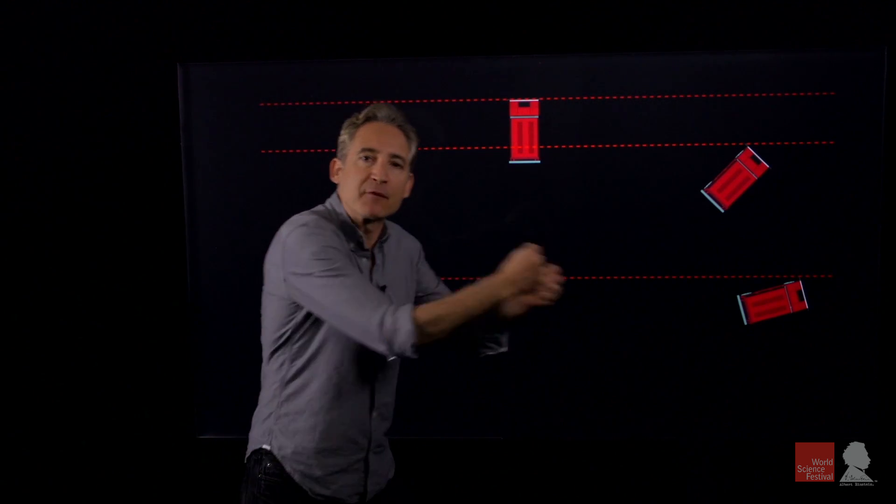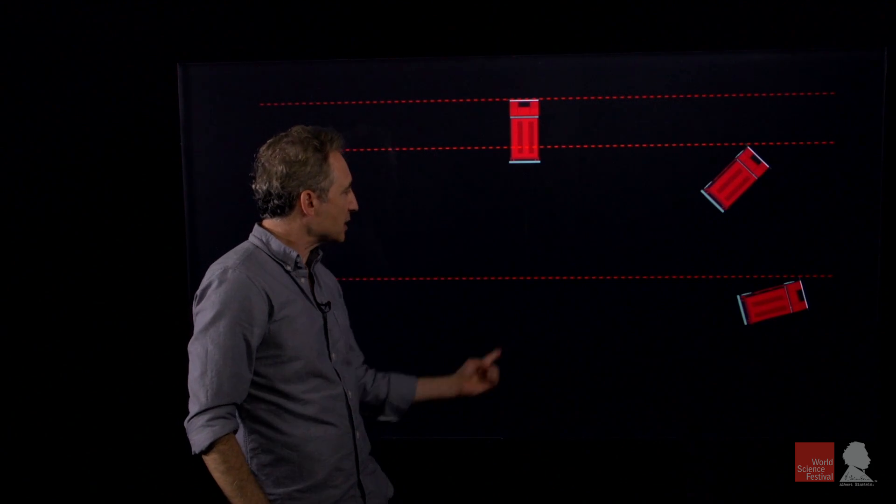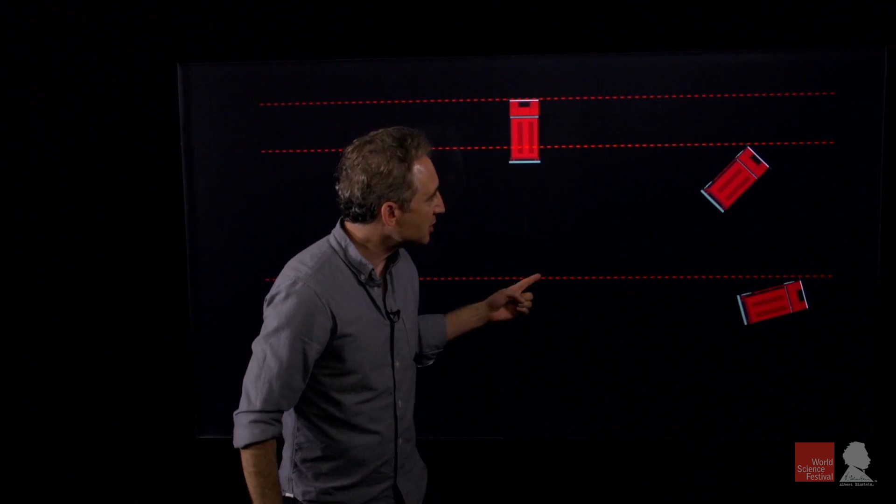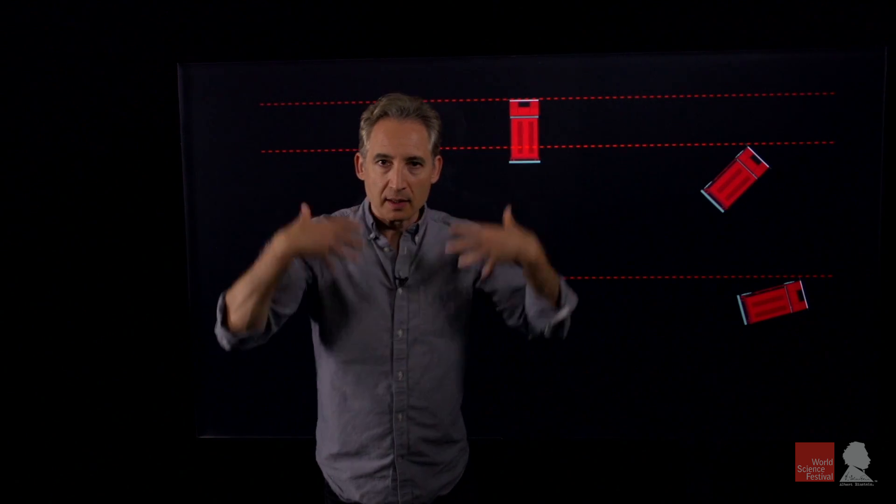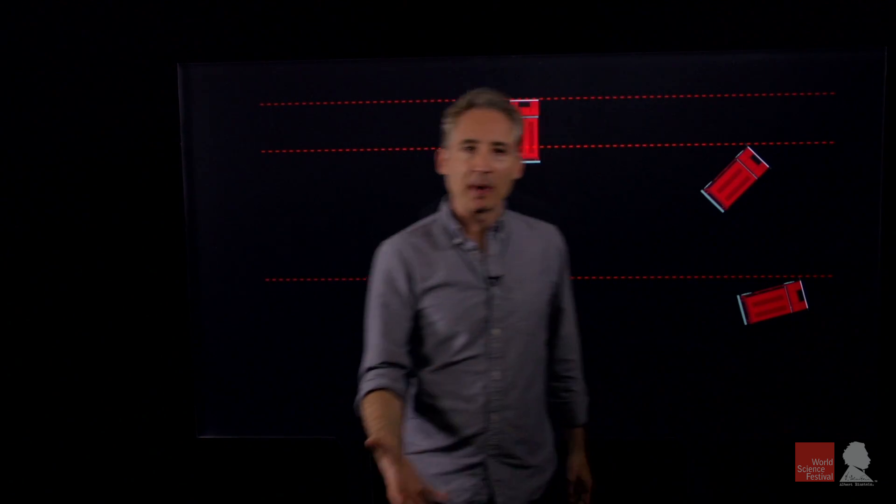Because that motion has been diverted into a different direction. In this case, it's diverting a spatial motion in one direction to a spatial motion in another direction. In the interesting relativistic case, it's my motion through time that's now being diverted into motion through space. So my motion through time slows down.